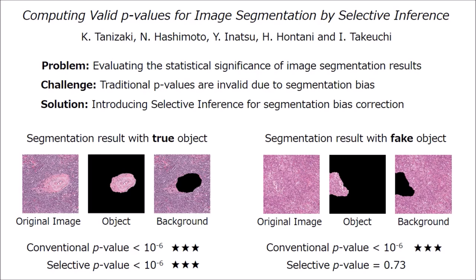To provide valid p-values, we propose a new statistical inference framework called selective inference, and it can be shown that selective inference provides theoretically valid p-values for segmentation results.